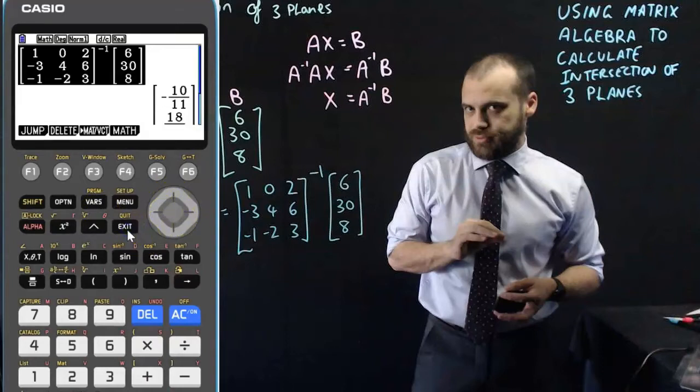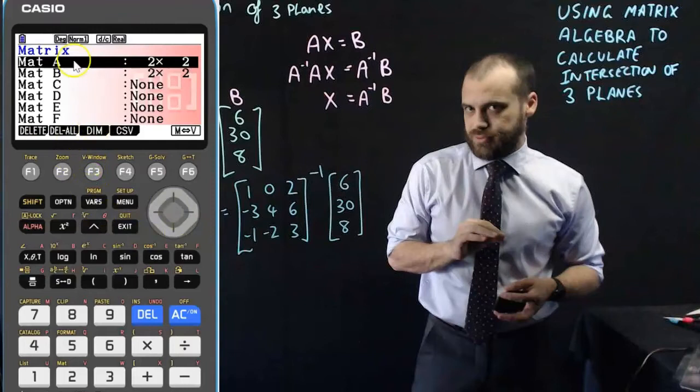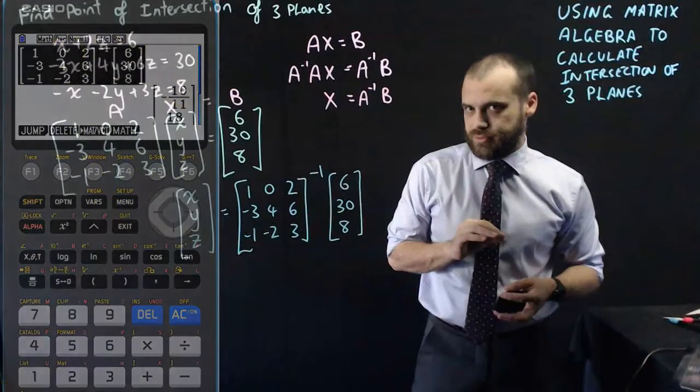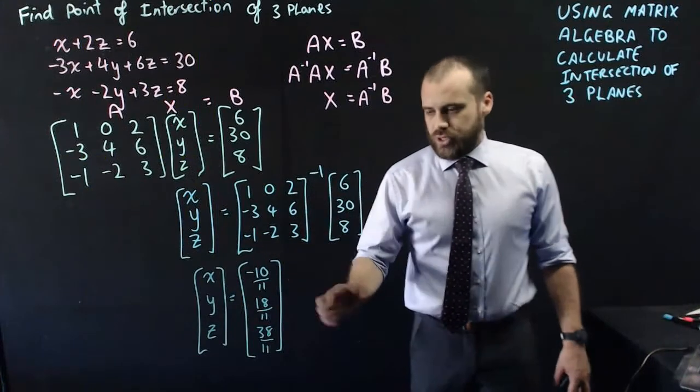Now, there is another way to do this really quickly. You can click the MATVCT button, but then you have to enter your matrices and then call your matrices in the equation. It's a little more convoluted, but that's my way to do it. And there is our point of intersection.